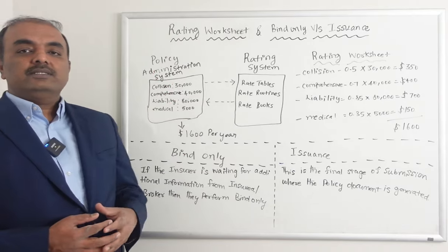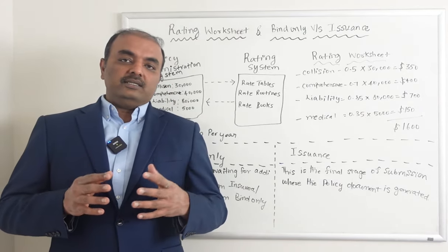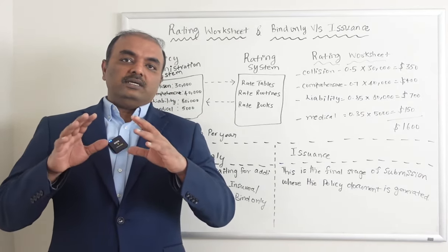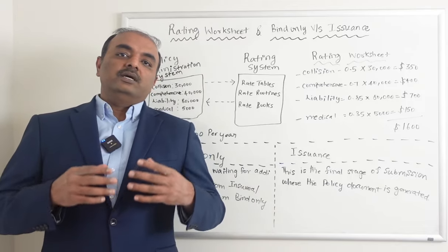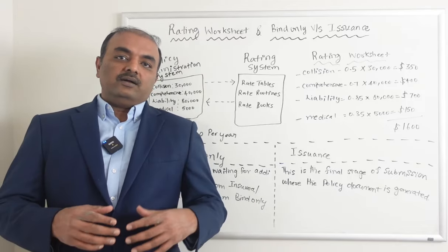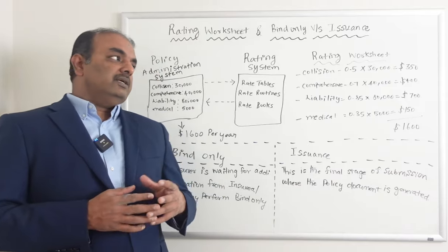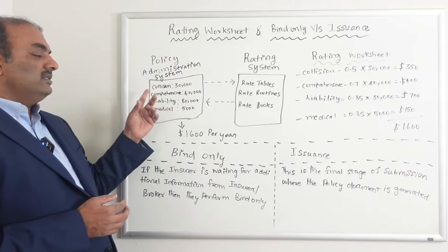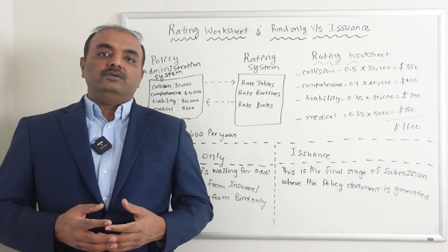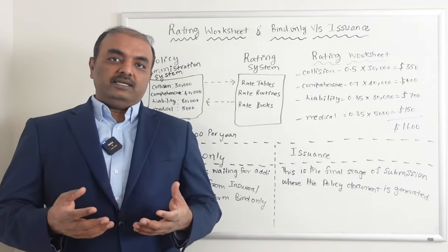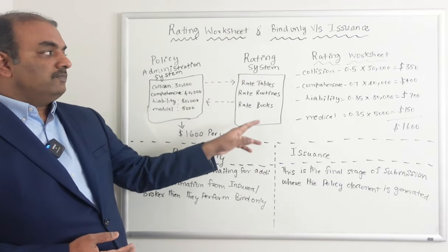So what happens typically is the insurance company enters your data in a policy administration system — it could be Duck Creek or Guidewire. Once they enter it, they send your information including your insured information, your past history, etc., to a rating system.